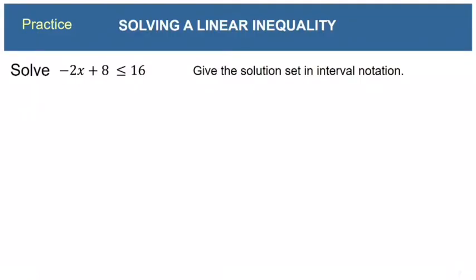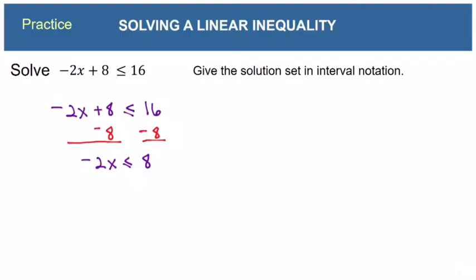Here's one for you to try — I hope you'll pause the video and do it on your own before watching me. Let's go through it together. Subtract 8 from both sides, leaving us with negative 2x is less than or equal to 8. Now divide both sides by negative 2. Dividing by a negative forces us to reverse the inequality symbol.